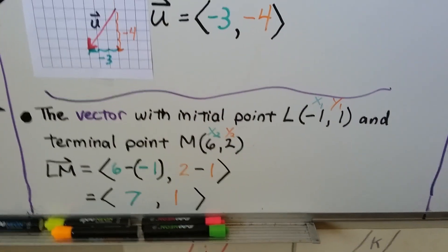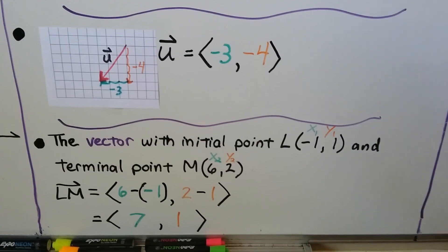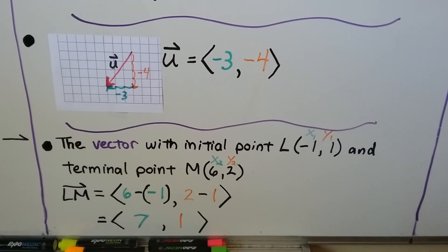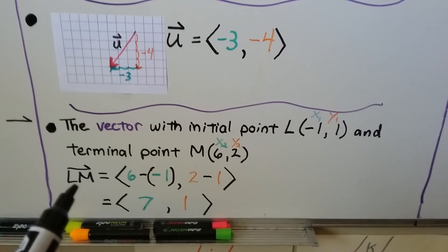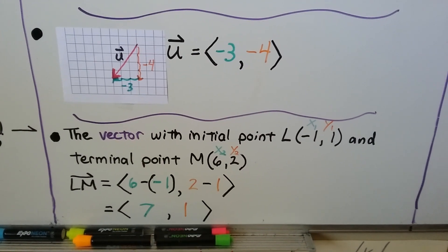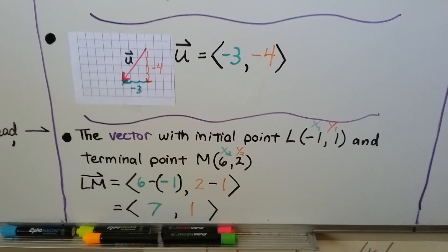And the vector with initial point L, so our x sub 1 is negative 1, our y sub 1 is a 1. And a terminal point of M, so our x sub 2 is a 6, our y sub 2 is a 2. Vector LM would be 6 minus negative 1 and 2 minus 1. We'd add the opposite and get a 7 and a 1.